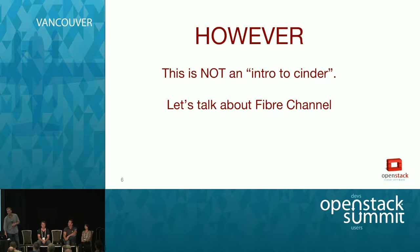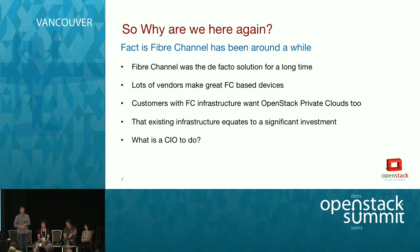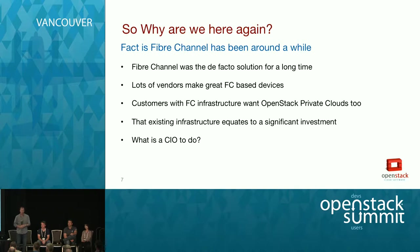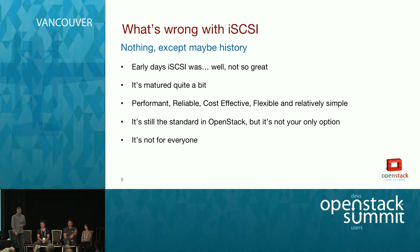This is a talk about Fibre Channel and Cinder. Fibre Channel has been around for a long time. For a while it was the de facto solution in IT data centers. Lots of vendors have great Fibre Channel devices, and many customers have invested heavily in Fibre Channel infrastructure. That's a really significant investment. So when you look at something like OpenStack that is predominantly iSCSI, it makes some really hard decisions.